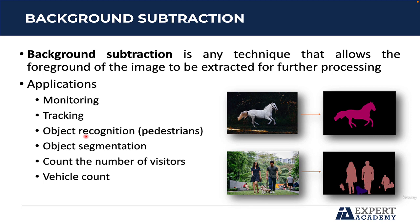Another application is the recognition of objects such as pedestrians, which can be used in the development of self-driving cars. This is object segmentation, which is basically separating the object from the background of the image. Another very interesting application that we are going to implement step by step is counting the number of people or the number of vehicles — for example, to know how many people were present at a certain event, or how many vehicles are traveling on a certain road.